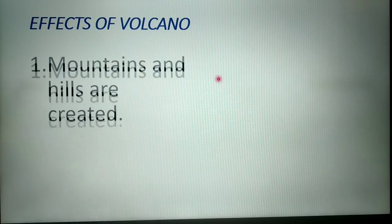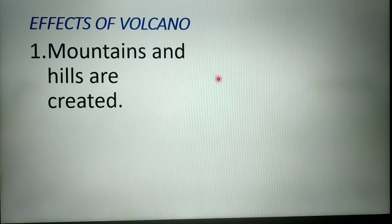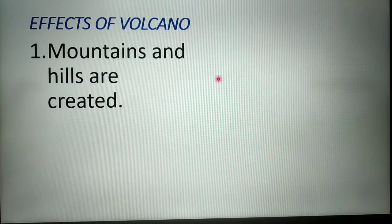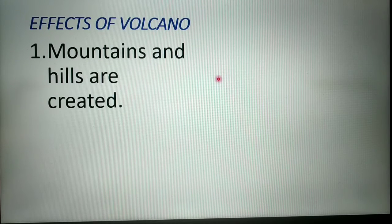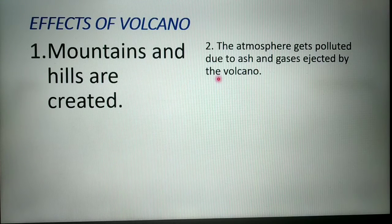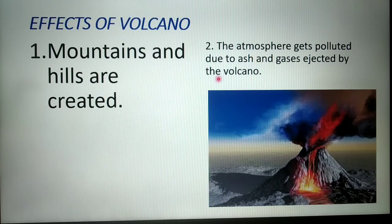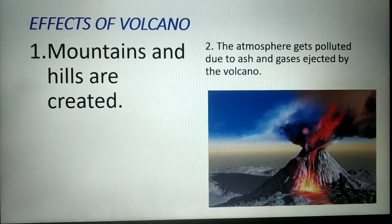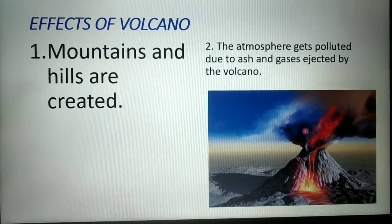Let us look at the effects of a volcano. First, mountains and hills are created — large amounts of molten lava, vapor, hot mud, and sulfur are collected on the surface of the earth, forming new hills and mountains. The atmosphere also gets polluted due to ash and gases ejected by the volcanic eruption.